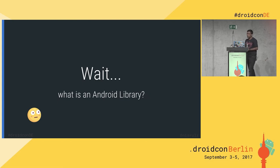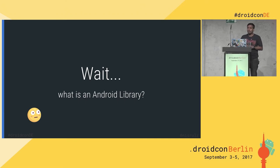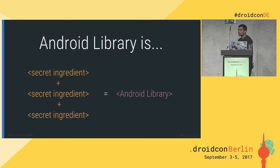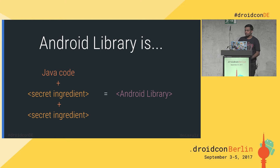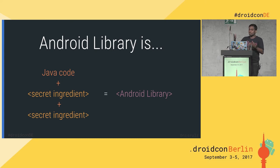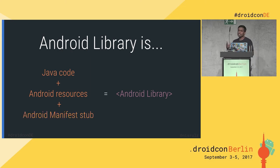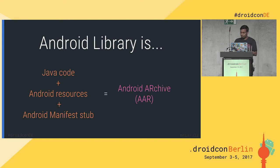An Android library, according to me, is basically a reusable piece of logic written in code. But I like to put it as being made of three secret ingredients. The first is Java code — if used in Java, you can have a JAR (Java Archive). An Android library adds Android resources and an Android manifest stub. When combined, these form an Android Archive — in short, AAR.